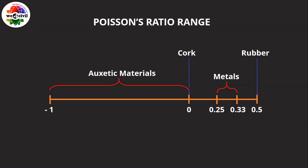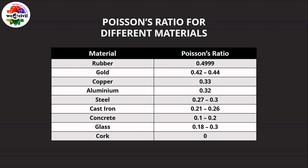Some modern materials have a negative Poisson's ratio; these are known as auxetic materials, which will be discussed later in this video. For different materials: rubber is approximately 0.5, gold ranges from 0.42 to 0.44, copper is 0.33, aluminum is 0.32, steel is 0.27 to 0.3 (commonly taken as 0.3 in problems), and cast iron ranges from 0.21 to 0.26. For most common metals, Poisson's ratio ranges from about 0.25 to 0.33.